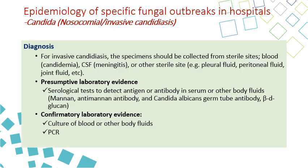For invasive candidiasis, specimens should be obtained from appropriate body sites depending on the type of infection. For candidemia, you get blood; for meningitis, CSF; for peritonitis, peritoneal fluid; for pleurisy and lung infection, pleural fluid. There are presumptive lab tests that detect antigen or antibody in the serum, like mannan antigen and mannan antibody, Candida albicans germ tube antibody, and beta-D-glucan test. Confirmatory testing depends on culture of blood and other appropriate body sites or PCR testing.